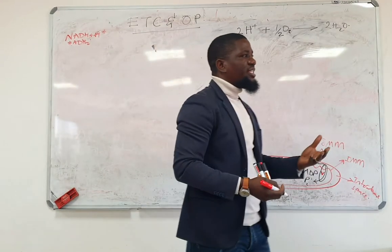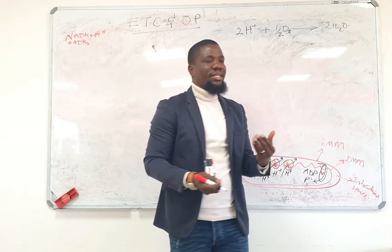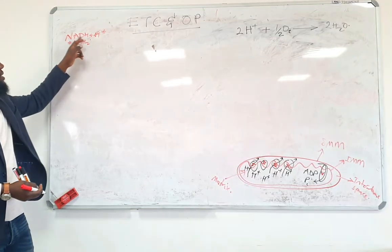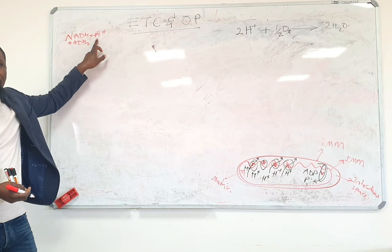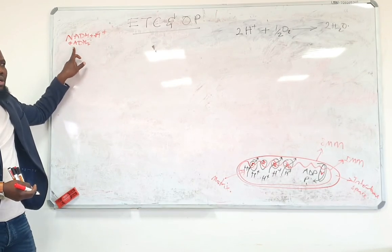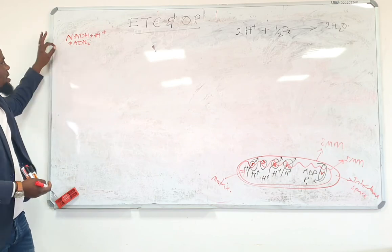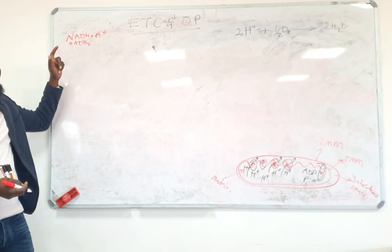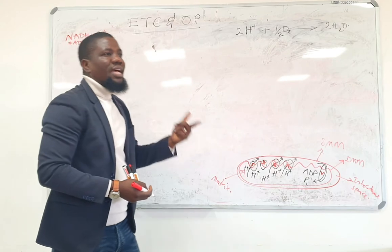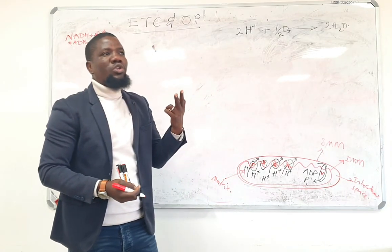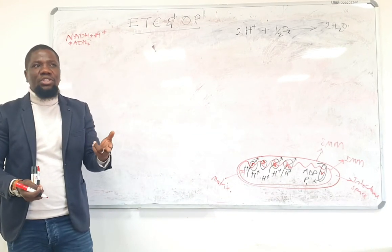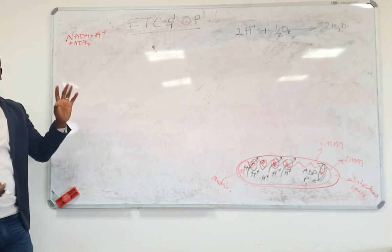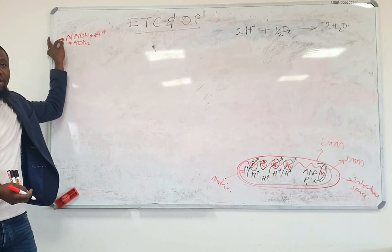B2, riboflavin, would work as the coenzyme flavin adenine dinucleotide (FAD) — actually for succinate dehydrogenase. There are not so many enzymes that use FAD as their coenzymes: it would be succinate dehydrogenase, fatty acyl-CoA dehydrogenase, and in the bridging reaction, pyruvate dehydrogenase complex and alpha-ketoglutarate dehydrogenase complex also use FAD as their coenzymes.